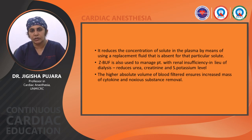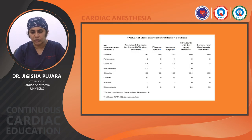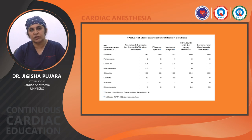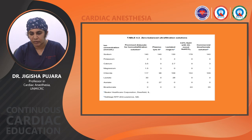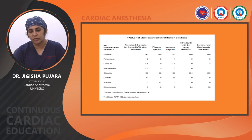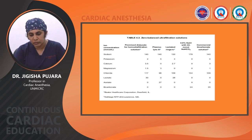Higher absolute volumes of blood filtered ensure increased mass of cytokines and noxious substances removed. When Z-BUF is used for hyperkalemia, various replacement solutions may be used. With normal saline, bicarbonate must be added. Plasmalyte or Ringer's lactate already contain magnesium, lactate, and acetate, which can be converted in the liver to bicarbonate. However, when using 0.9% sodium chloride, if the patient is already on diuretics and sodium is low, a sudden increase in sodium may cause approximately 1.74 mEq of sodium load, potentially causing myelinolysis and demyelination in the pontine and extra-pontine tissues, leading to brain damage.